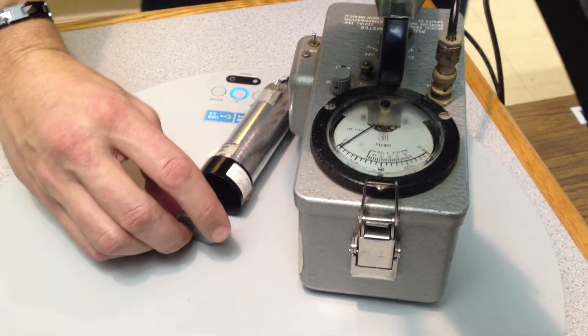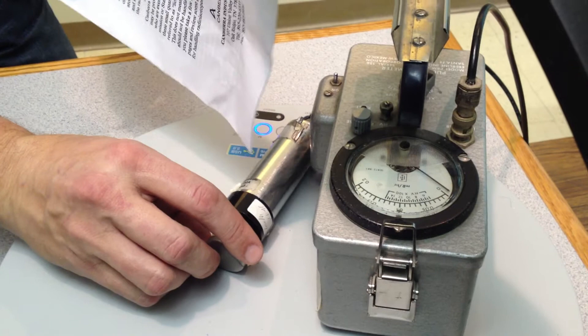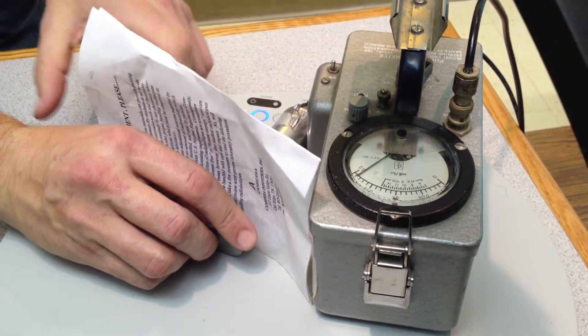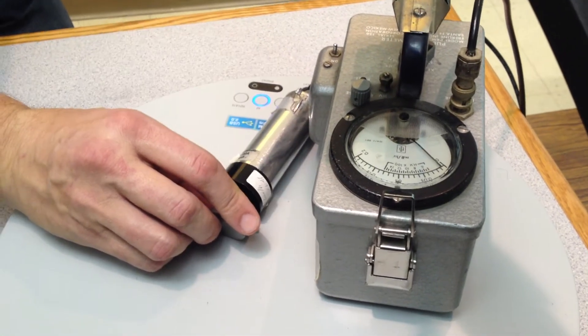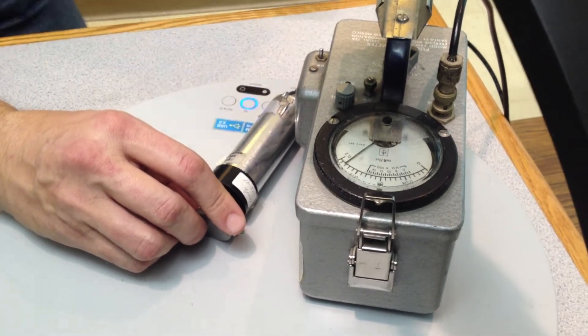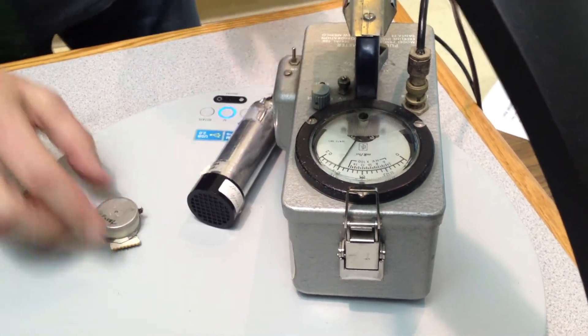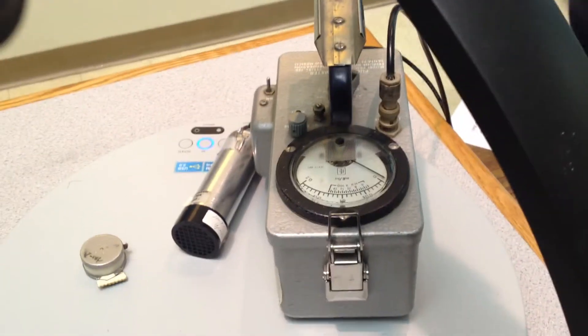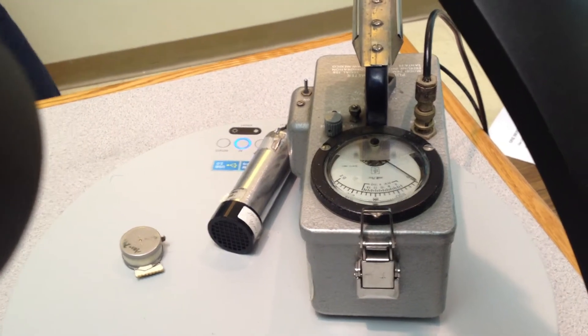Not only does it not travel through air very far, but I can take this sheet of paper and block most of it. Now, what source is that? That is americium. That's americium-241.